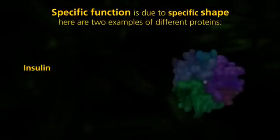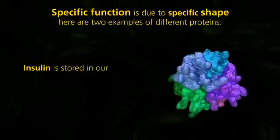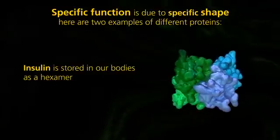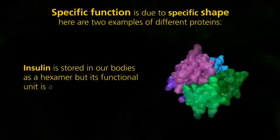Insulin is another example. It is stored in our bodies as a hexamer, but its functional unit is a monomer.